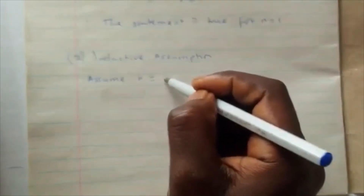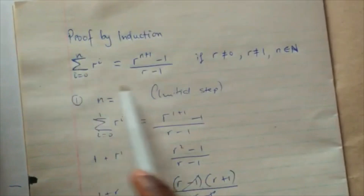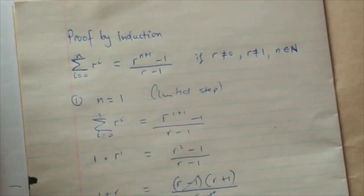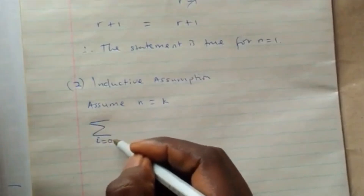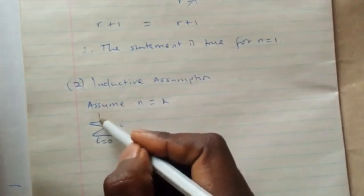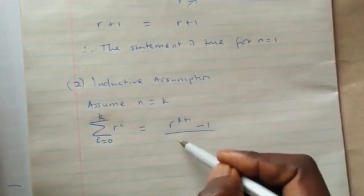What we do at this stage is plug in k. Wherever we have n, we replace n with k. So on the inductive assumption, assume n equals k: the summation of r^i from i equals zero to k is equal to r^(k+1) minus one over r minus one. This stage is the inductive assumption.